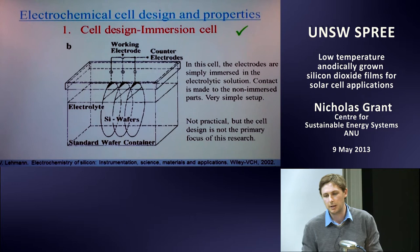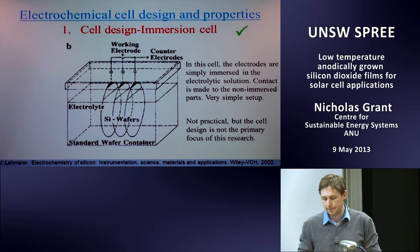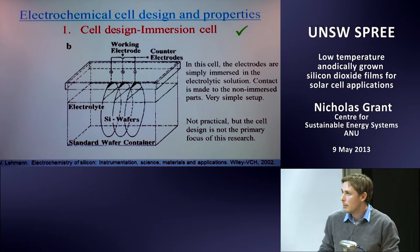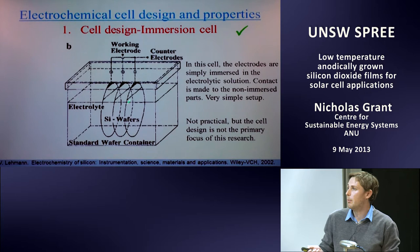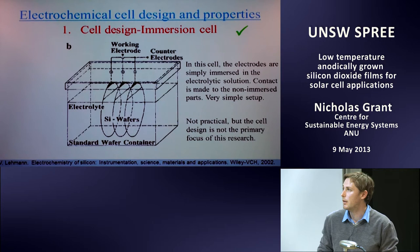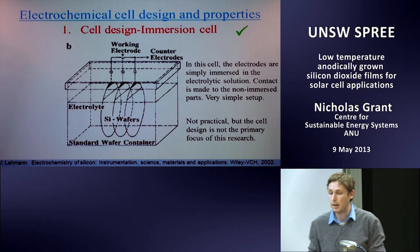The simplest design — and the one I've employed over the last couple of years — is an immersion cell, because it's easy to alter and fix. The full wafer isn't entirely submerged, but contact is made to the top of the silicon wafer and it's just dunked in the electrolyte. You have your cathode, your anode, and the oxide will grow on both sides of the wafer. This is the cell I'll be presenting today.